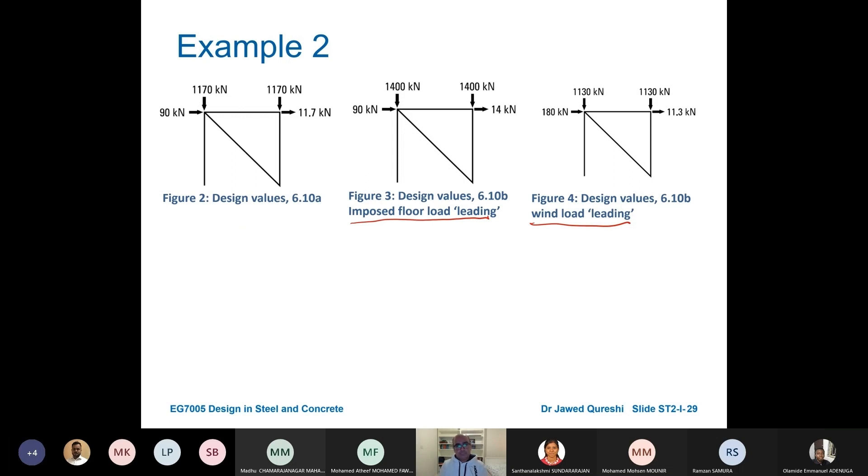If you're designing a building as a whole you need to check all the combinations. If you were designing this frame for vertical loads which combination would you choose? Which is the worst case scenario? Figure two, figure three or figure four. If I design it for this loading 1170 the structure is actually subjected to higher load. The highest of all these three is this figure three. For vertical loads, for gravity loads I will choose the worst case scenario.